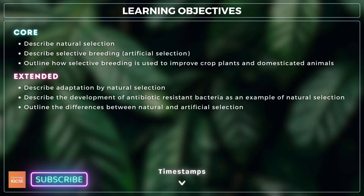For extended, you also need to describe adaptation by natural selection, with reference to the development of antibiotic-resistant bacteria, and outline the differences between natural and artificial selection.